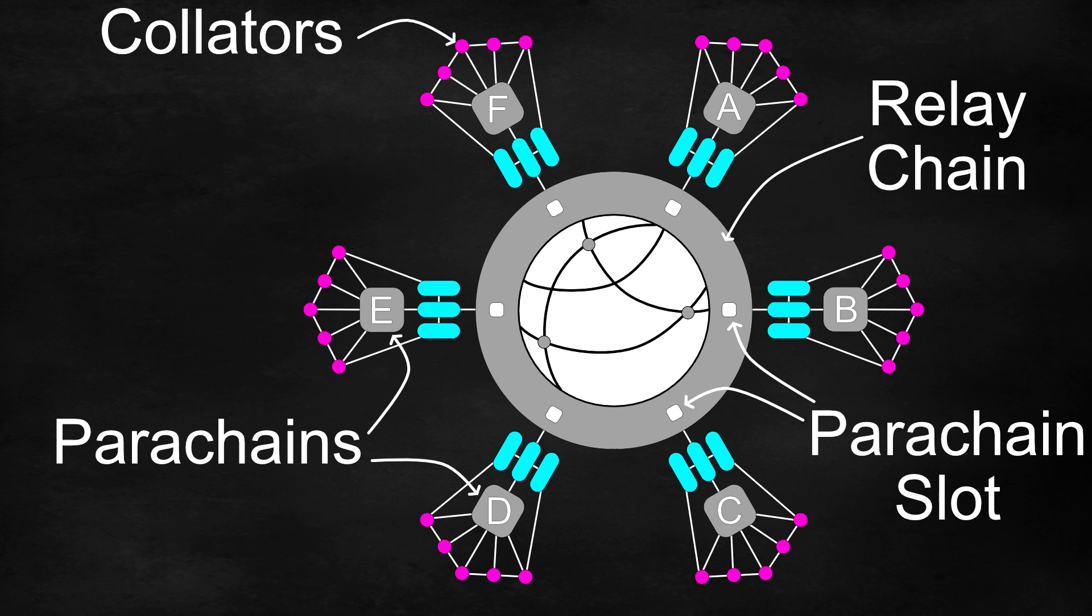The pink circles are representative of collators and the blue oblongs are representative of validators. Like we said before, don't worry if this looks intimidating, we will be explaining all of this using simple terminology right now.